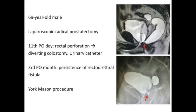We perform a transsphincteric repair with the Jorg Mason procedure. Prophylactic antibiotics are given intravenously just before the procedure, and a cystoscopy is performed to identify the ureteric orifices and to introduce a ureteric catheter through the fistula into the rectum for later identification.